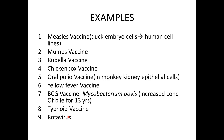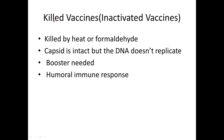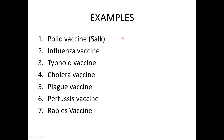The killed or inactivated vaccine is killed by heat or formaldehyde. The capsule remains intact, providing the immunogenicity needed to elicit an immune response. However, it contains no DNA and therefore cannot replicate in your cells. A booster dose is required since there is no viral replication. The type of immunity obtained is humoral immunity. Examples include inactivated polio vaccine (injectable/Salk), influenza, typhoid, cholera, plague, pertussis, and rabies vaccines.